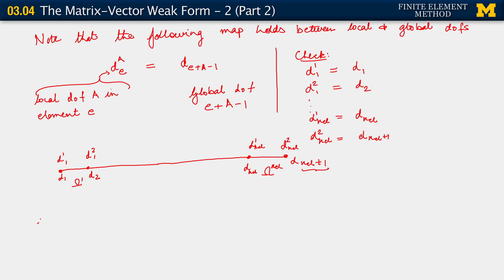Of course, the same thing holds for the weighting function degrees of freedom: c_a^e equals c_{e+a-1}. We've made the observation about this mapping between local and global degrees of freedom. We will use this to go back to the weak form written in terms of matrix and vector products over each element, and carry out an important process of finite element assembly. We'll come back to this in the next segment.